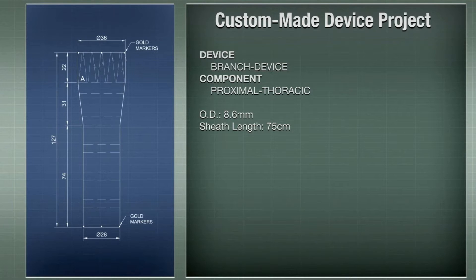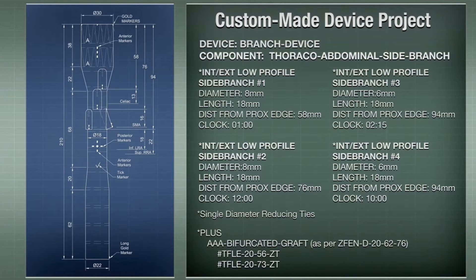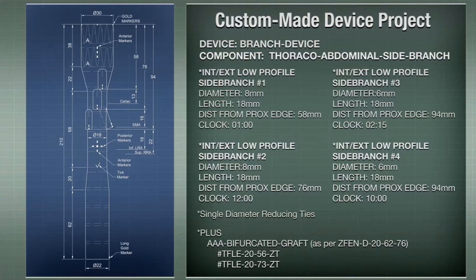To reconstruct the thoracic aorta and create a regular proximal landing zone, one custom-made branch stent graft with four branches and one bifurcated stent graft — very similar to the regular one except for the absence of a free-flow stent — is used. Since this graft will land inside the distal portion of the branched graft, only barbs are necessary for appropriate sealing and to avoid disconnection of the system. Regular iliac stent grafts complete the set.